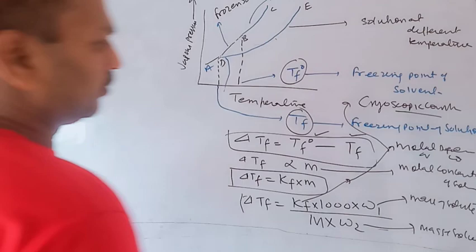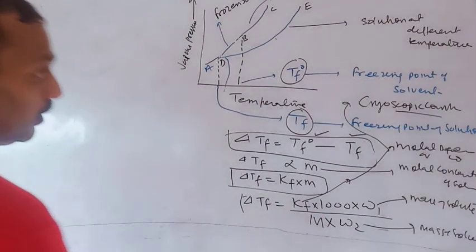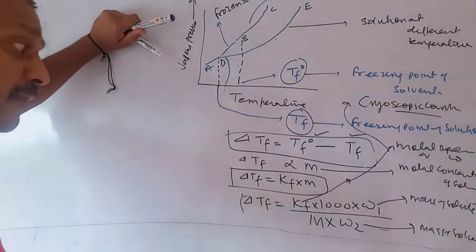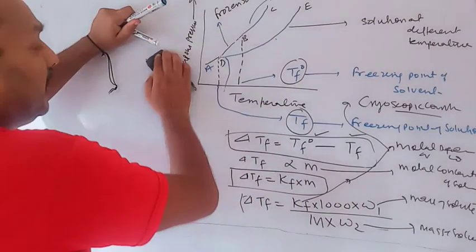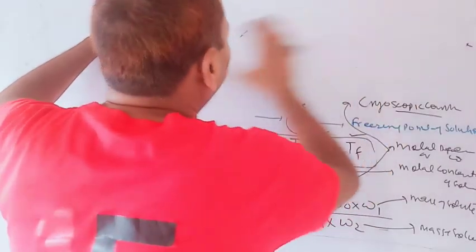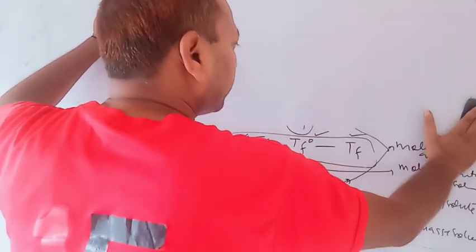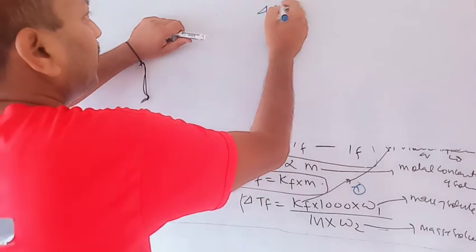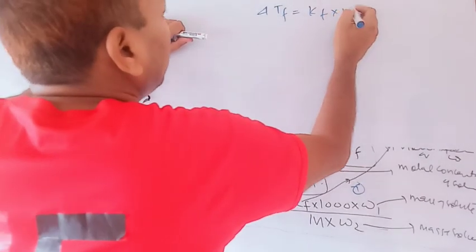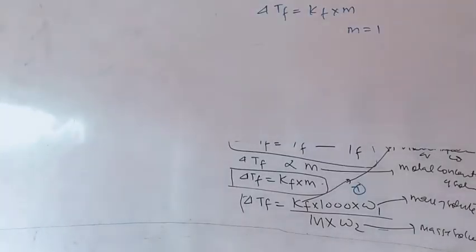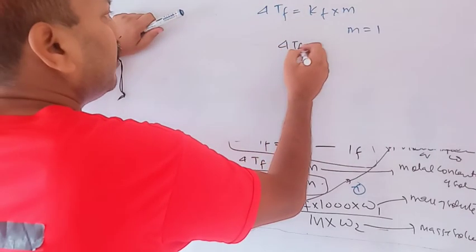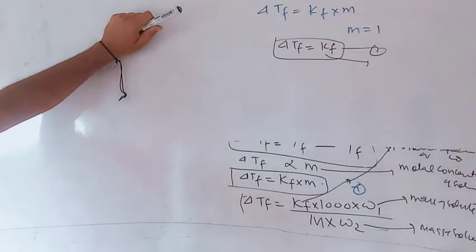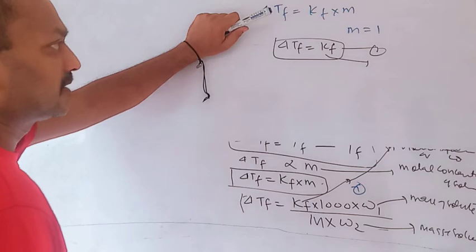Kf is the molar depression in freezing constant, also called the cryoscopic constant. This formula will help you solve numericals and evaluate the molecular mass of the solute. The definition of Kf: when the molality M equals one, then delta Tf becomes equal to Kf. This is also the definition of the molar depression in freezing point constant, or cryoscopic constant.